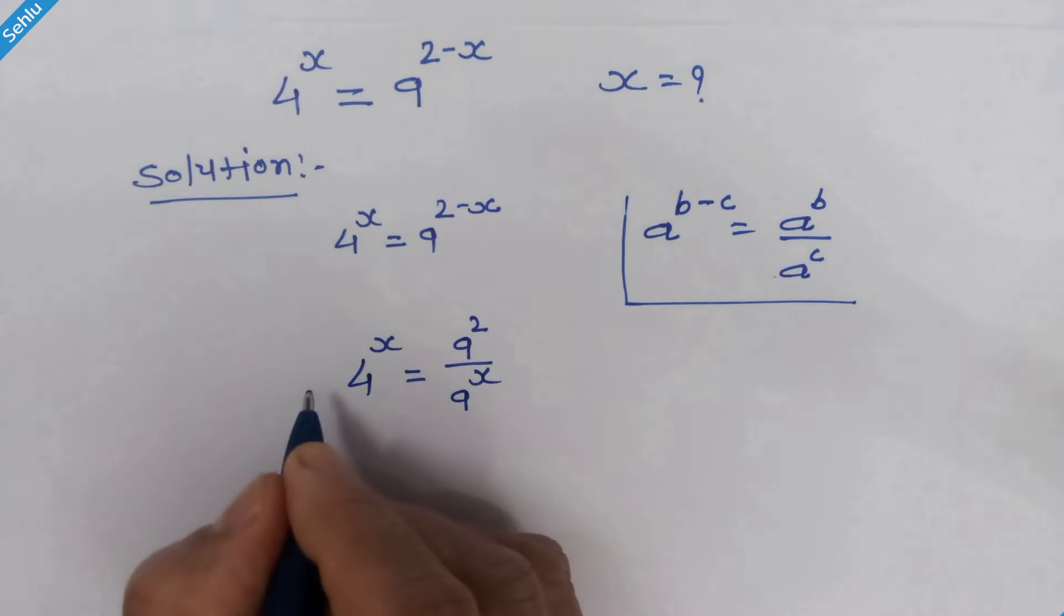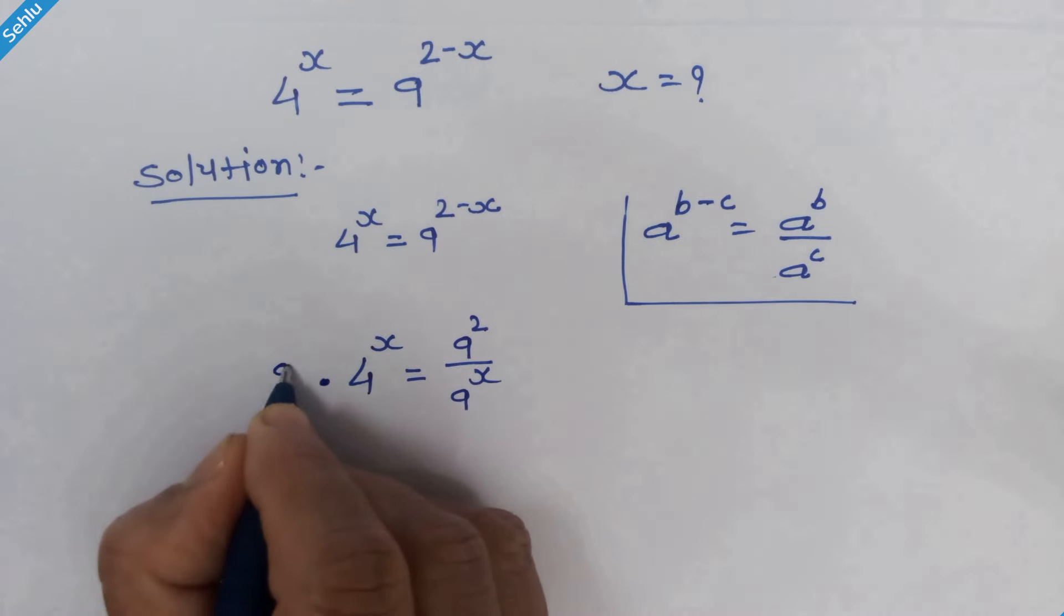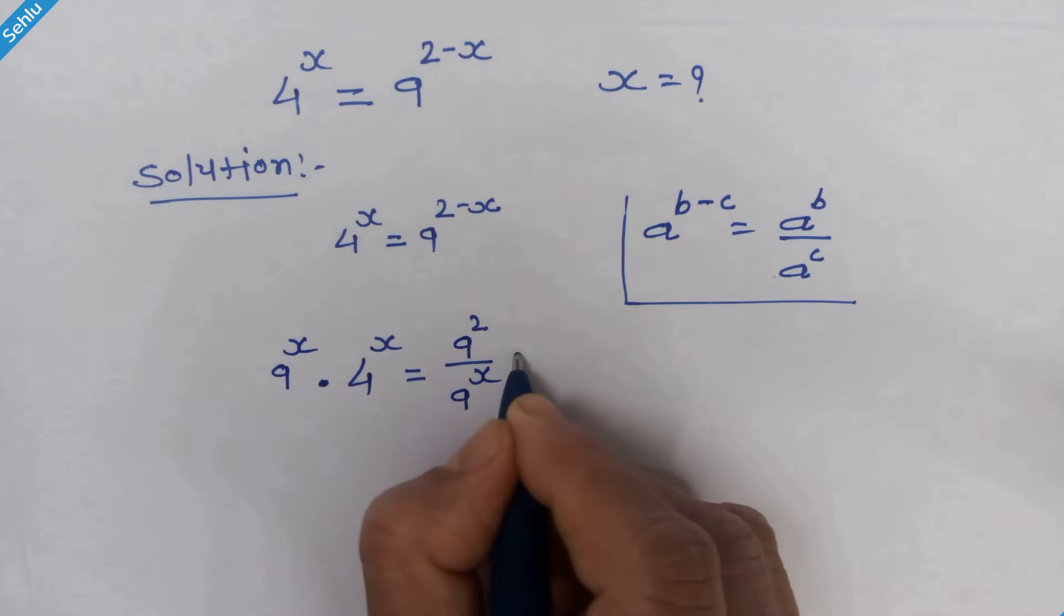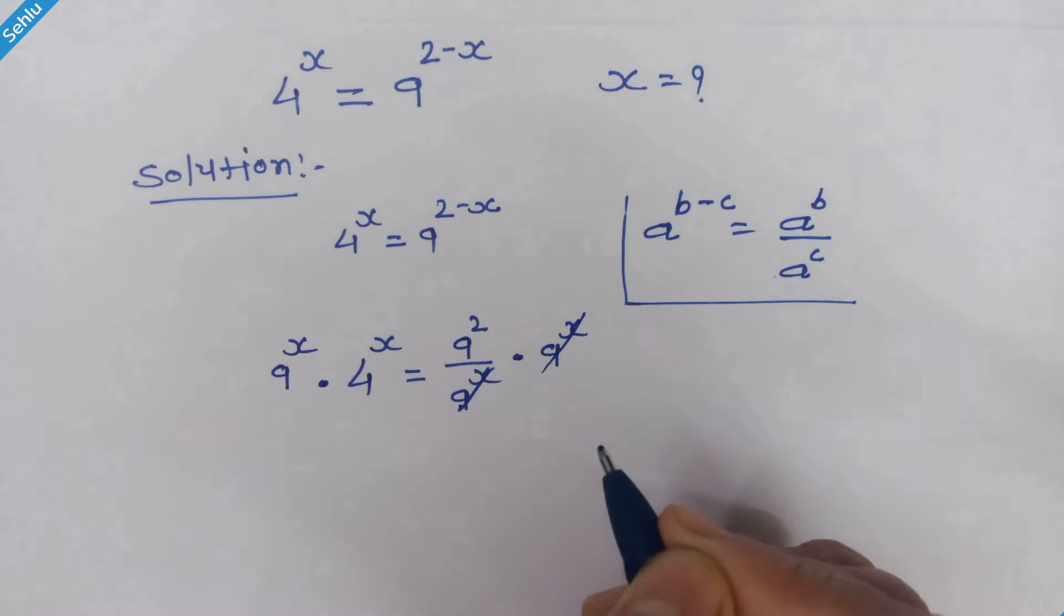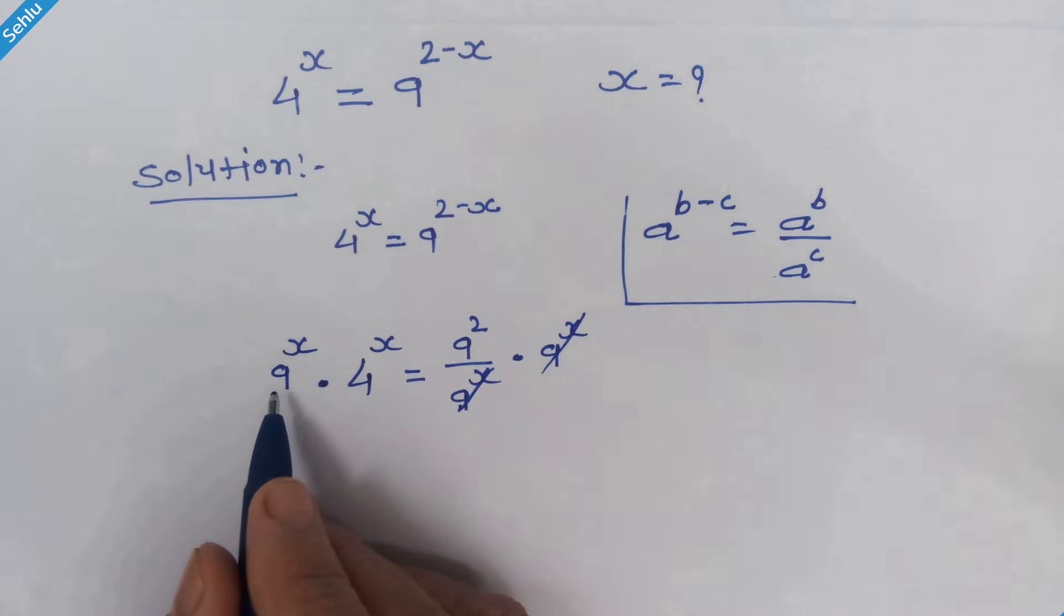Now we'll multiply both sides by 9 raised to x. These two will be eliminated, and since 9 and 4 have the same exponent, we can combine them.